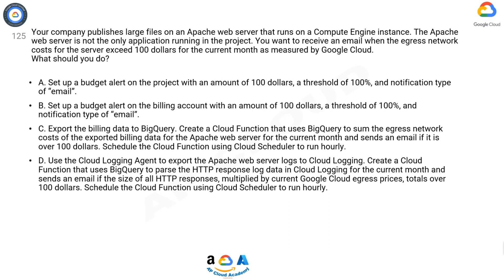C: Export the billing data to BigQuery. Create a Cloud Function that uses BigQuery to sum the egress network costs of the exported billing data for the Apache web server for the current month and sends an email if it is over $100. Schedule the Cloud Function using Cloud Scheduler to run hourly.